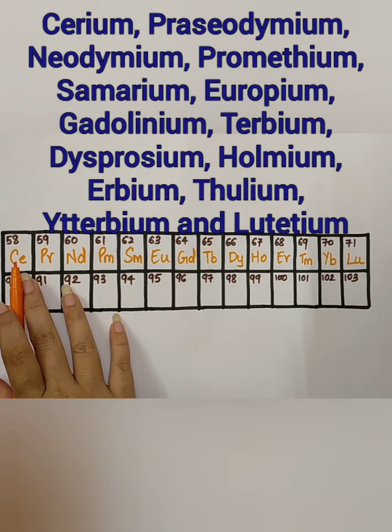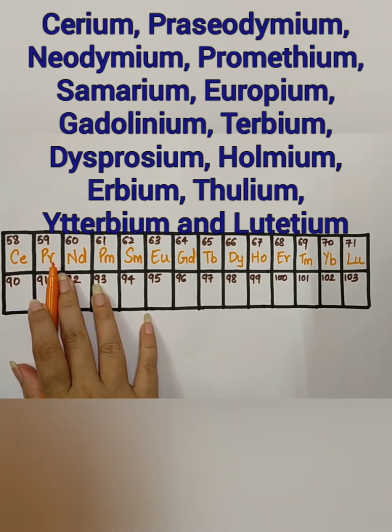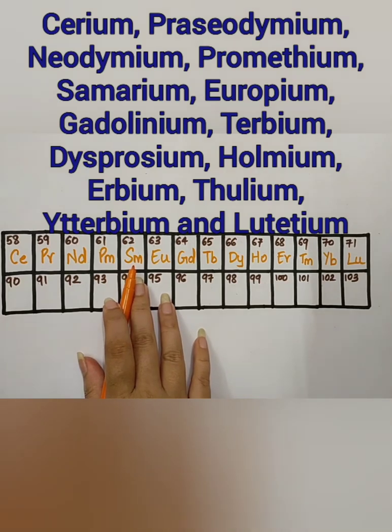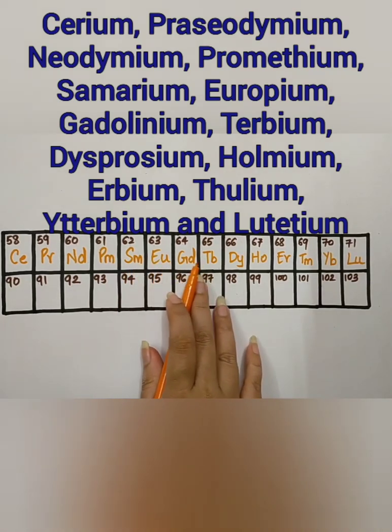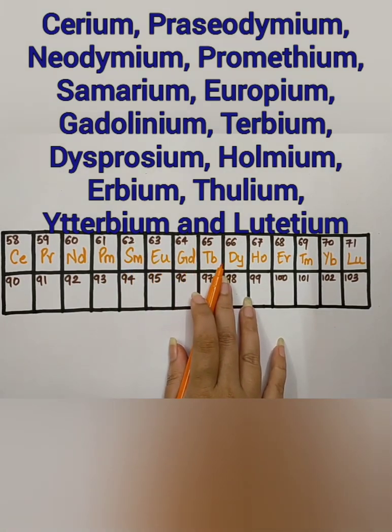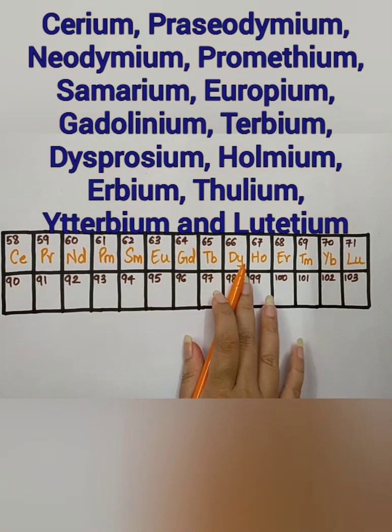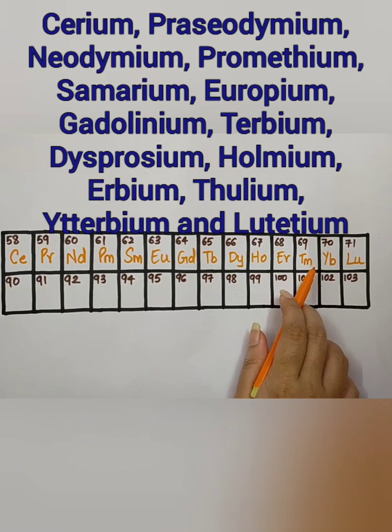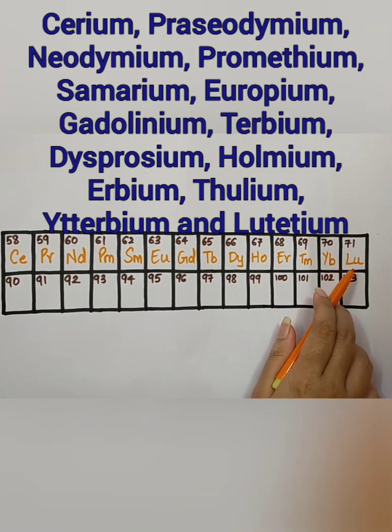The elements are, cerium, praseodymium, neodymium, promethium, samarium, europium, gadolinium, terbium, dysprosium, holmium, erbium, thulium, ytterbium, lutetium.